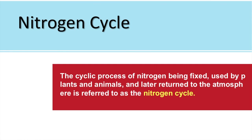Air contains 78% nitrogen — that's a very huge amount. But the problem is that in air, nitrogen is present in gaseous form, whereas plants can take nitrogen for their purpose only in the soluble nitrate form. So the process done to convert nitrogen from the gaseous state to the nitrate form is called fixation, and it is necessary for the plant to make protein.